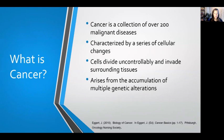Let's start with the biology of cancer. Cancer is a collection of over 200 malignant diseases, characterized by a series of cellular changes in which our cells divide uncontrollably and start to invade surrounding tissues. This tends to arise from the accumulation of multiple genetic alterations, which we'll talk about in a couple slides.